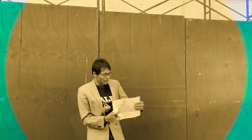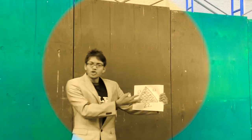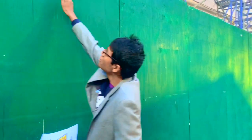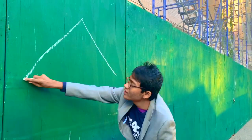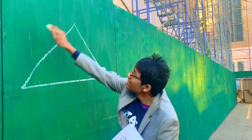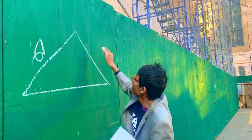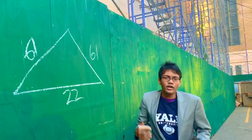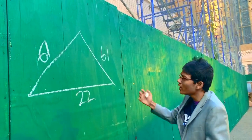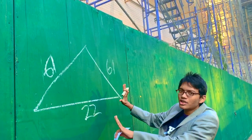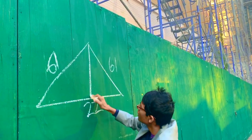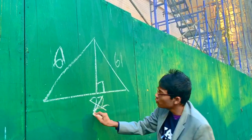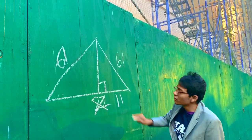Today we're solving a geometry problem — we've got to find the area of that triangle right there. Let's enlarge it so you can see: it's an isosceles triangle with sides 61, 61, and 22. To find the area, shoot a perpendicular bisector from the vertex angle — that's going to cut the 22 into 11.